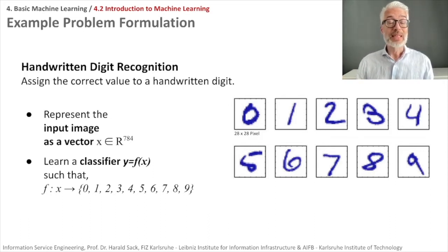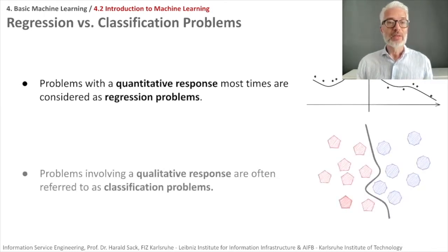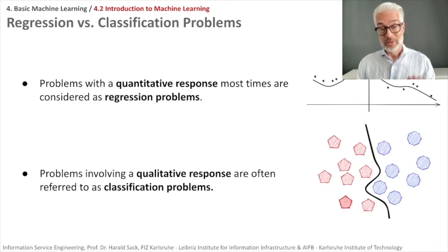We can distinguish different kinds of machine learning problems. What we distinguish here is the difference between regression and classification problems. Problems with a quantitative response, where the prediction is a specific value, are regression problems. Problems involving a qualitative response, trying to tell whether a geometric form belongs to the red or blue class, are classification problems.